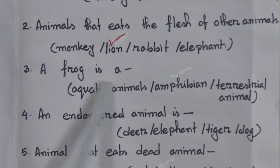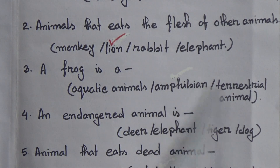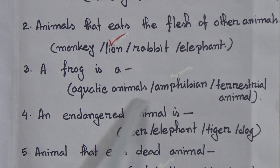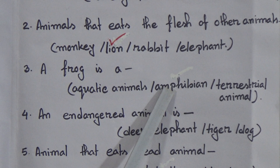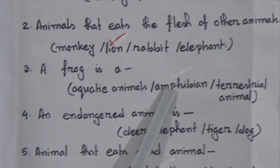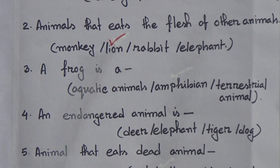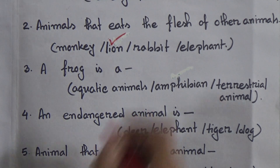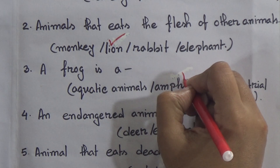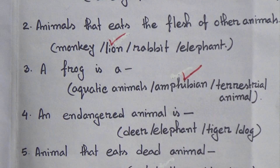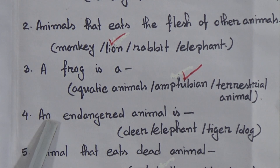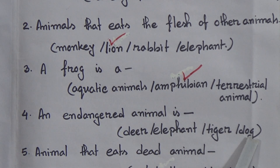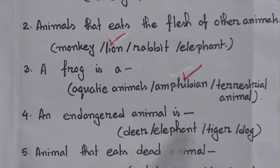Number three: a frog is a — aquatic animal, amphibian, or terrestrial? Dear students, we read today that the frog is an amphibian because the frog lives both on land and in water. So the answer is amphibian.